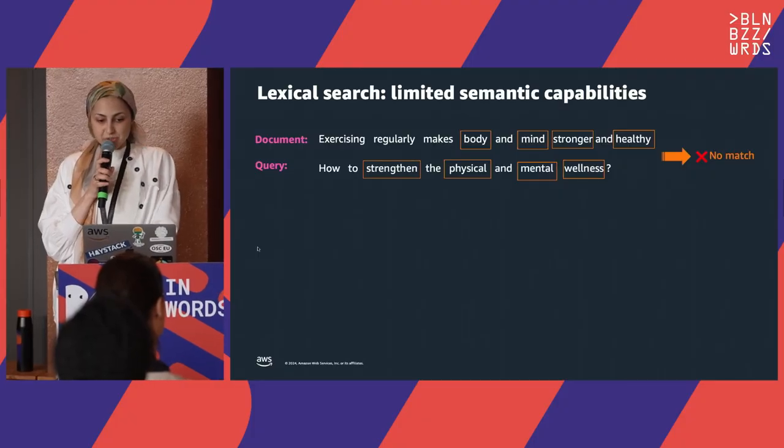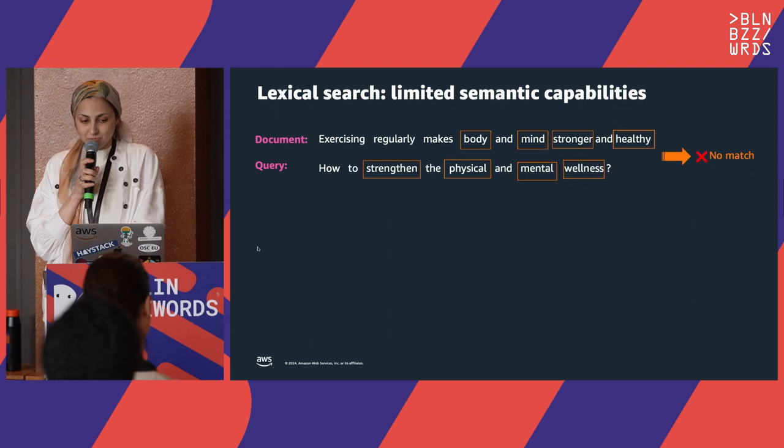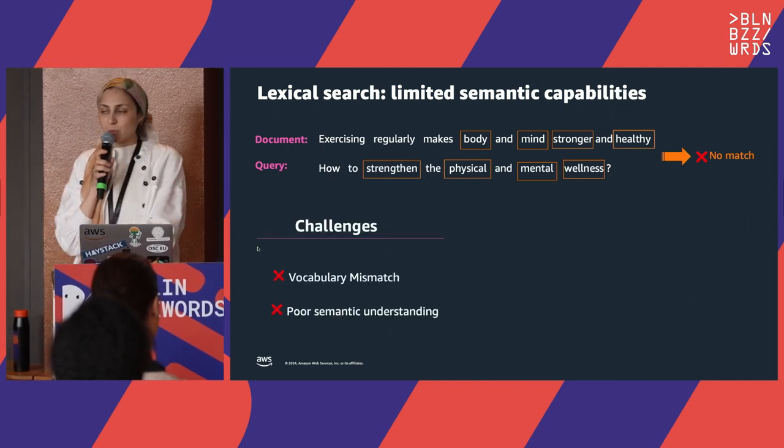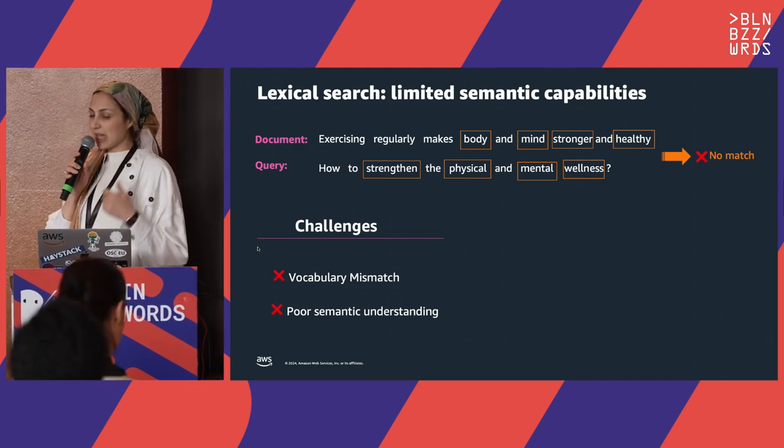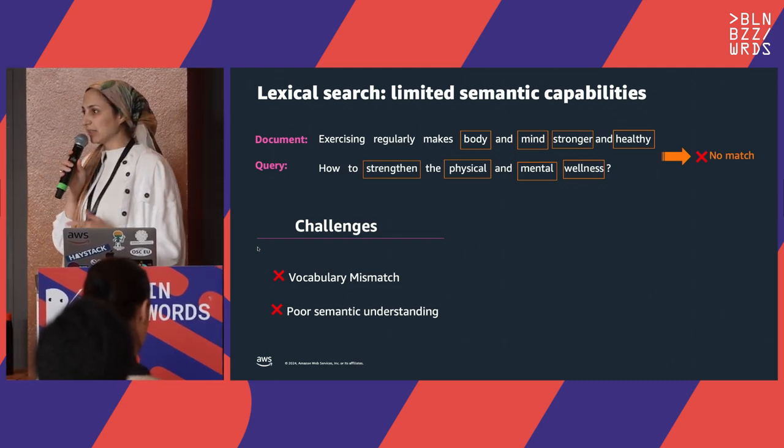Lexical search will try to match the tokens in your query with the tokens in your documents. We don't have exact tokens between the query and the document. However, if we dig deeper, we have 'body' and 'physical' — they are related, semantically and contextually related. The same for 'mind' and 'mental', and 'stronger and healthy' with 'strength and wellness'. This is where we hit the challenges with keyword search: vocabulary mismatching and poor semantic understanding of words.